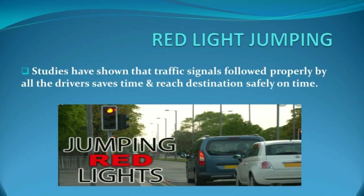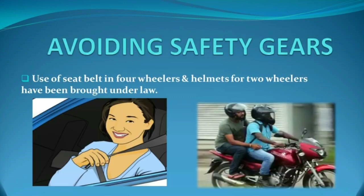Red light jumping: The main motive behind red light jumping is saving time. Studies have shown that when traffic signals are followed properly by all drivers, it saves time and helps reach the destination safely. Avoiding safety gears: Use of seat belts in four-wheelers and helmets for two-wheelers has been brought under law. These reduce the severity of injury during accidents.